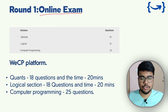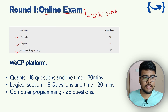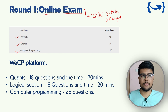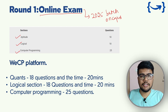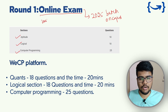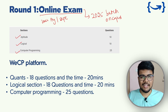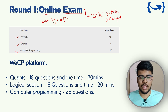Round one is an online exam covering aptitude, logical, and computer programming sections. This video is specifically for the 2025 batch on-campus placement hiring. Recently, people in our Prime Coding community have shared screenshots showing that MindTree will be visiting their colleges, possibly in the last week of August or in September. This video will be your weapon — it will help you understand their pattern and how to crack it.